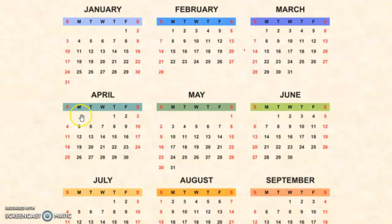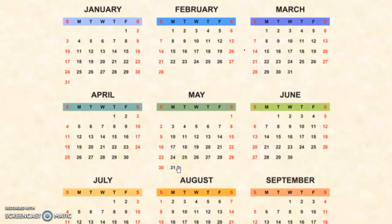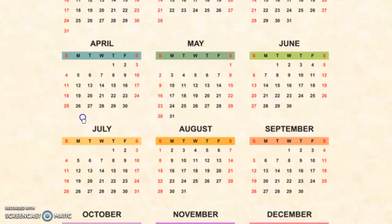There is a question where you have taken a membership on the 1st of April and the membership ends on the 30th of June. For how many months have you registered? April 1st to 30th is one month, May is two months, June 1st to 30th is another month — so you have taken a membership of 3 months. This is how we find time intervals.